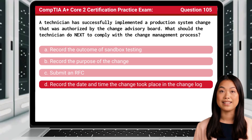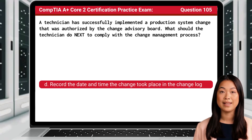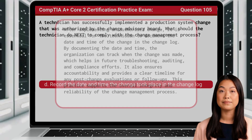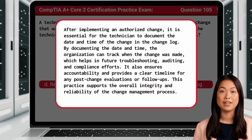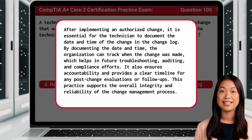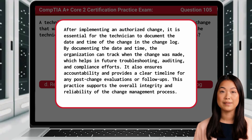The answer is D: Record the date and time the change took place in the change log. After implementing an authorized change, it is essential for the technician to document the date and time of the change in the change log. This allows the organization to track when the change was made, which helps in future troubleshooting, auditing, and compliance efforts. It also ensures accountability and provides a clear timeline for any post-change evaluations or follow-ups, supporting the overall integrity and reliability of the change management process.